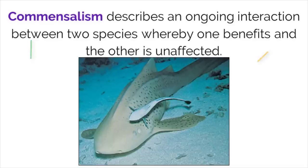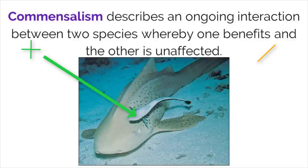A commensal relationship is one that benefits one organism and does not help or harm the other, leaving it unaffected. The image here shows the relationship between a remora, the smaller fish, and a shark. The remora follow and attach themselves to the shark and eat any of the uneaten food scraps left over from the meal. This benefits the remora and does not help or harm the shark in any way.